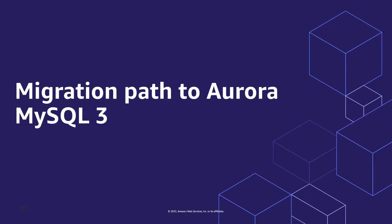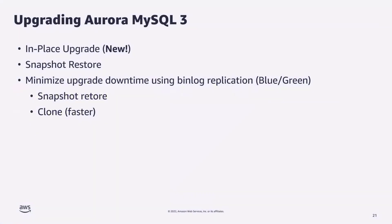Now let's look at options for migrating to Aurora MySQL 3. If you are currently on Aurora MySQL 2 and want to upgrade to Aurora MySQL 3, you can now do it in a single step using the in-place upgrade option, which was added just a few weeks ago. This was one of the top customer requests, as in-place upgrade support significantly reduces the operational burden of a major version upgrade. You simply modify the instance, select the Aurora MySQL 3 engine version, and apply the changes either immediately or during a maintenance window.